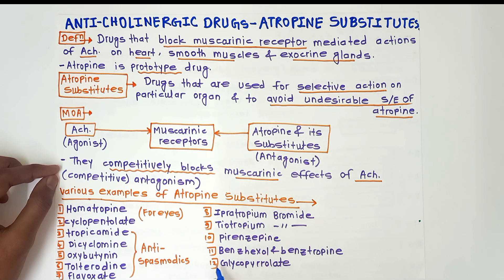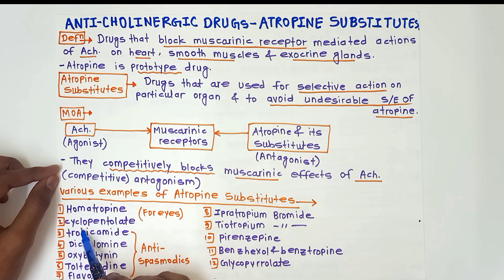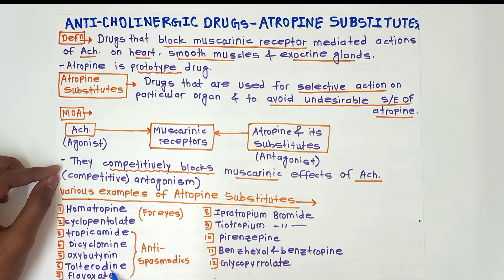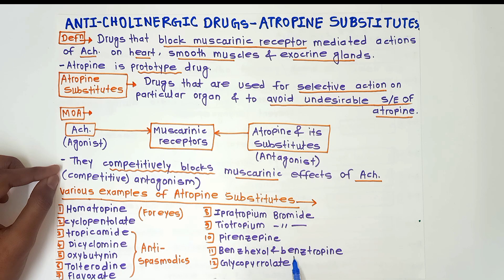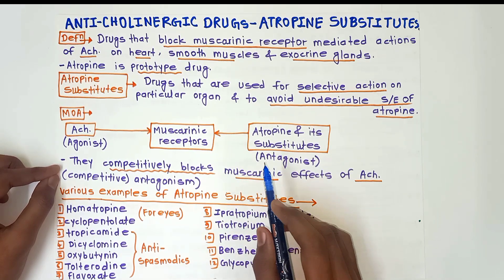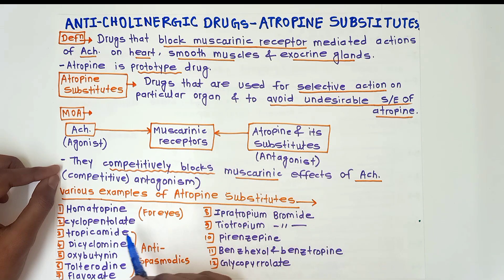There are 12 examples of atropin substitutes: homatropine, cyclopentolate, tropicamide, dicyclomine, oxybutynin, tolterodine, flavoxate, ipratropium bromide, tiotropium bromide, pirenzepine, benzhexol, benztropine, and glycopyrrolate. To remember these easily, check out my video on classification of anticholinergic drugs.